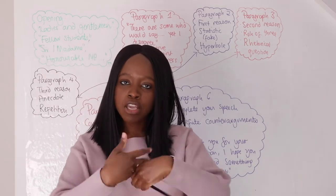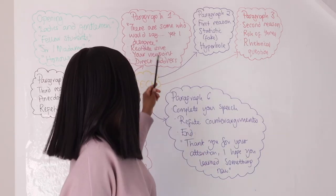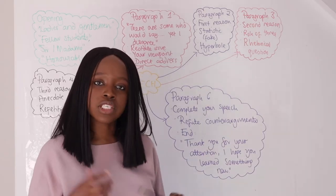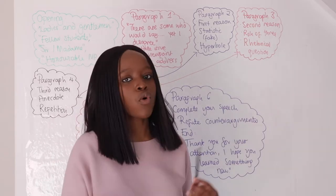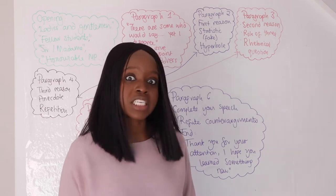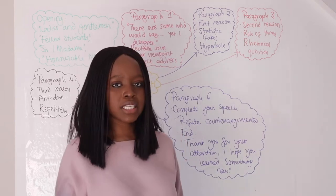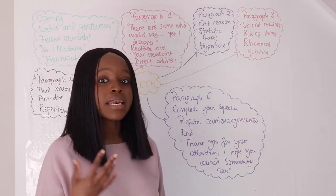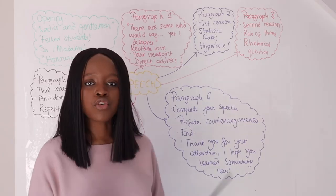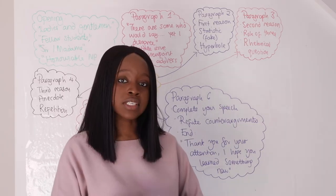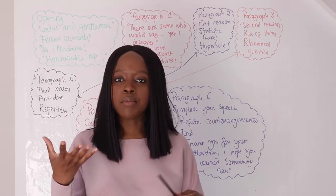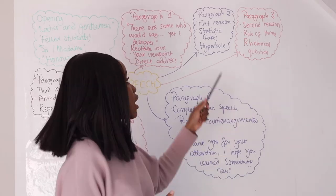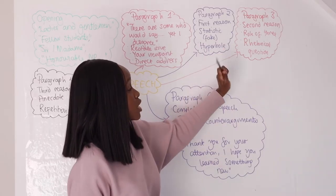Always make sure that consistently you have a direct address to your audience — use pronouns such as 'you' and 'we' to make your audience feel really included. Then in your second paragraph, you outline your first reason why you support your particular perspective. For example, going back to climate change, the first reason is that it's going to affect all of us — greenhouse gases have created a hole in the ozone layer, affecting different countries with unseasonable weather.